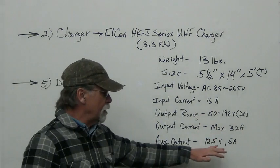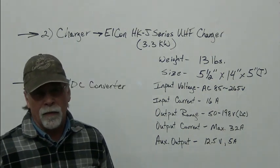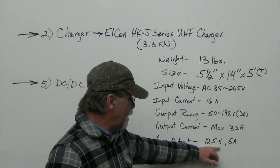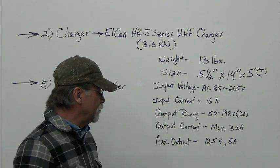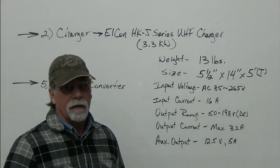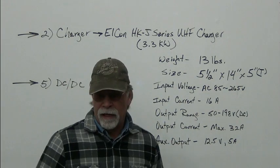Maximum output current is 32 amps. And it has an auxiliary output that we're going to talk about in a moment. And according to the spec sheet, it's 12.5 volts, 5 amps. That's not what we've experienced. I'll talk about that in a moment.